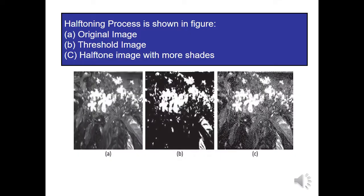In this diagram, you can observe that three images have been shown. First is the original image. Second is the threshold image — in the case of the threshold image, this particular process removes all the details of the image. While in the third case, it shows the halftone image where more number of shades have been displayed, taking advantage of various shades to create continuity in the image.